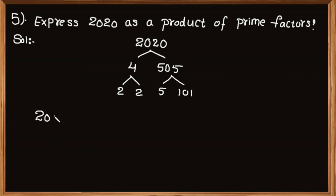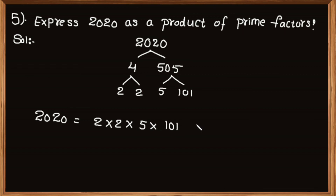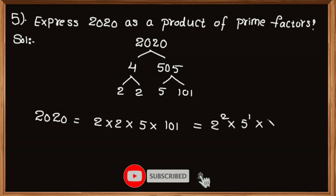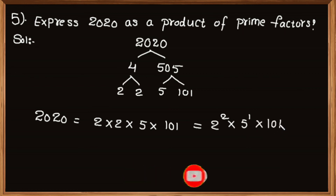Finally, 2020 can be factorized as 2 multiplied by 2 multiplied by 5 multiplied by 101, that is equal to 2 squared multiplied by 5 multiplied by 101.